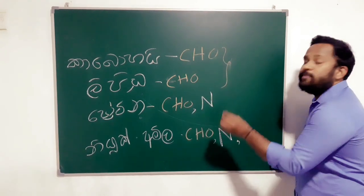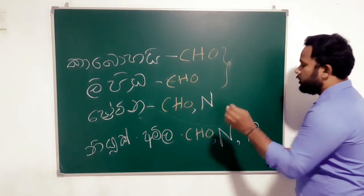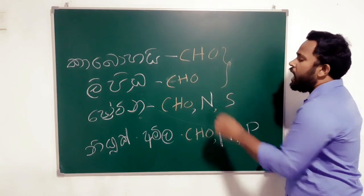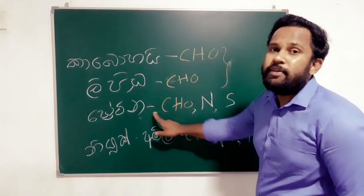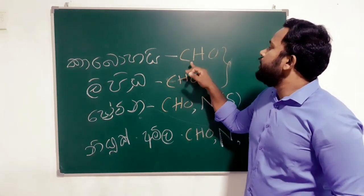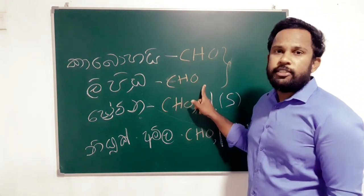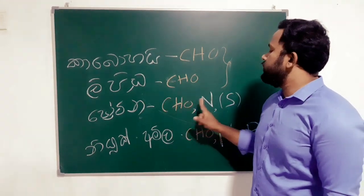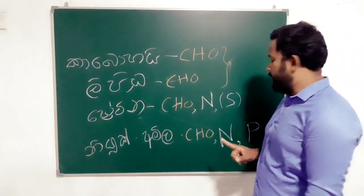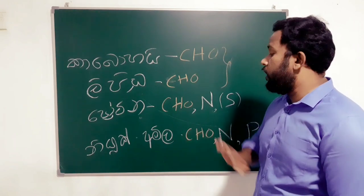We are also adding phosphorus. Sulfur is associated with protein. Carbon, hydrogen, oxygen is carbohydrate. Carbon, hydrogen, oxygen is also lipid. Carbon, hydrogen, oxygen, nitrogen is protein. Some proteins also contain sulfur. Carbon, hydrogen, oxygen, nitrogen, phosphorus is nucleic.